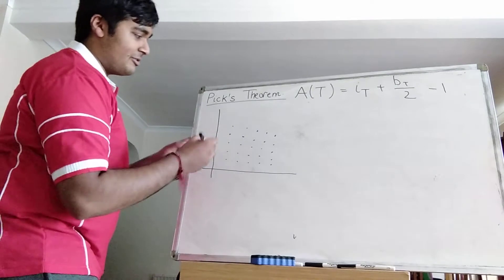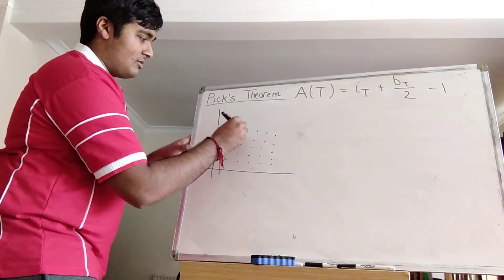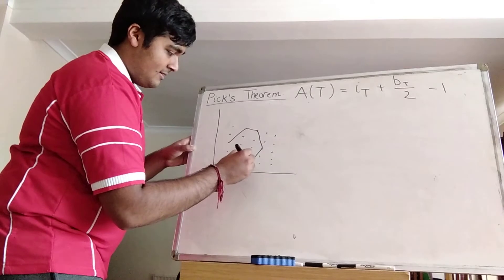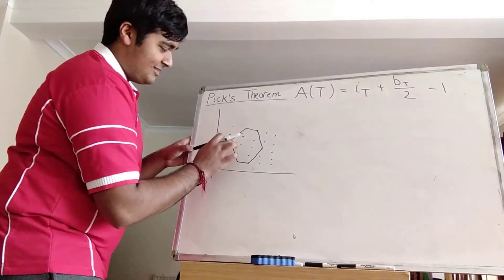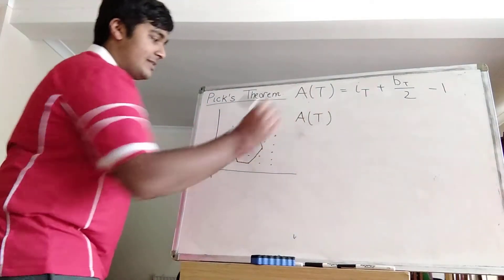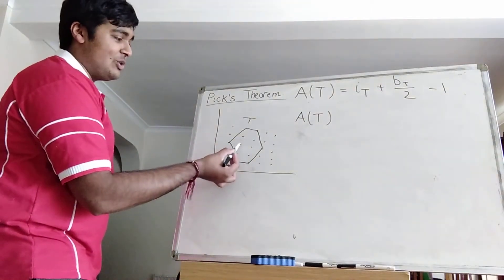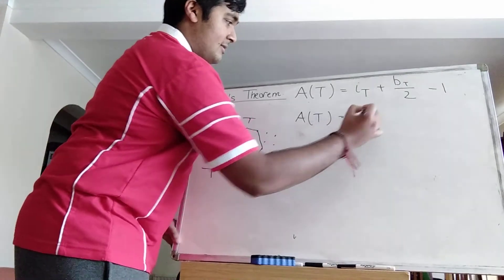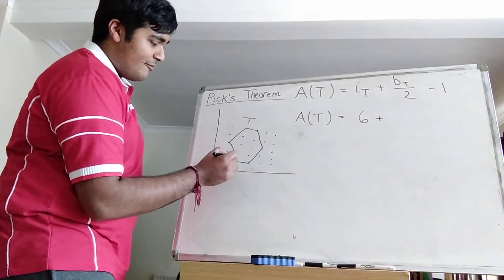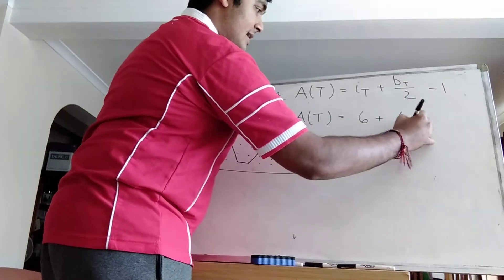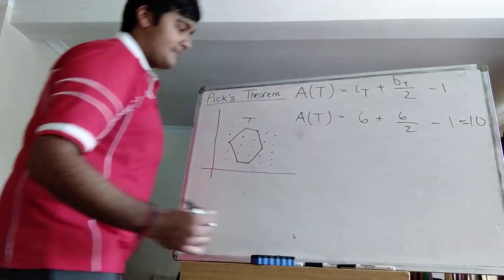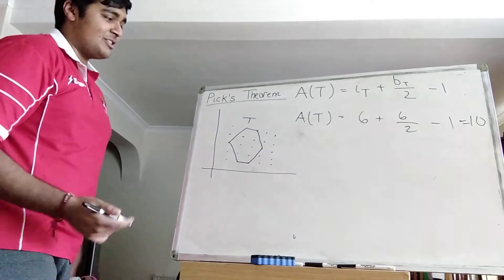If I have a polygon on this which has vertices on these points, for example this polygon here — let's call it T — to work out the area of T we simply count up the number of interior points. In this case it's 1, 2, 3, 4, 5, 6, then plus the number of points on the boundary divided by 2. That's 1, 2, 3, 4, 5, 6, over 2, and then subtract 1.